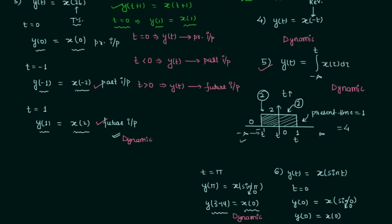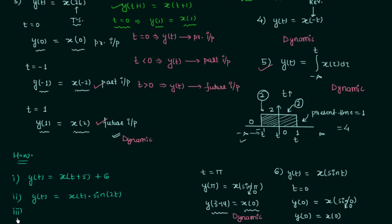Now let's move to the homework problems. In the first homework problem, y(t) = x(t)·sin(2t). In the third homework problem, y(t) = e^(−2t)·x(t). Find out the nature of the system in these problems — whether they are static or dynamic — and post your answers in the comment section.